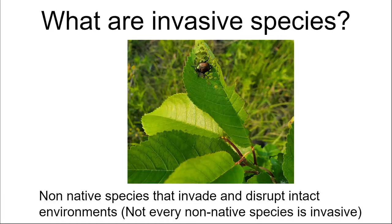The Japanese beetle comes from Asia and is a generalist that loves to eat all kinds of things — many times eating non-native species. For example, it's on a sweet cherry tree here, which is non-native but not invasive. The Japanese beetle is damaging to cultivated crops and some native species like basswood, but it ignores many natives. It is an example of an invasive species that causes problems, but not every non-native species is invasive.